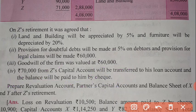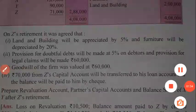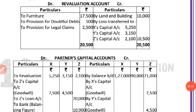We will prepare the revaluation account first. Furniture was depreciated, so I have written on the debit side: 'To Furniture 17,500.' Land and building was increasing, so on the credit side I have written: 'By Land and Building.' Now the next transaction is provision for doubtful debts to be made at 5% on debtors.